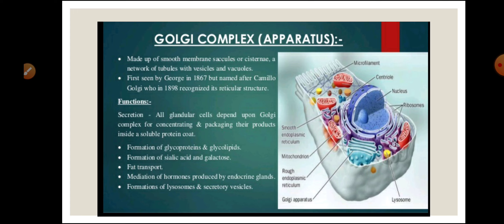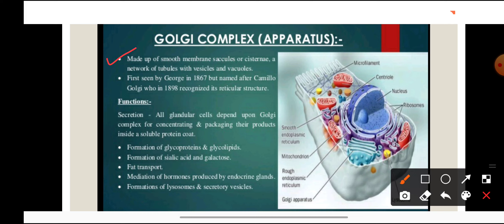The third organelle is the Golgi complex or Golgi apparatus. Like endoplasmic reticulum, Golgi complex is also made up of membranes — cisternae, tubules and vesicles. Golgi complex was first seen by George in 1867 but named after Camillo Golgi who in 1898 recognized its reticular network-like structure. It is spread throughout the cytoplasm.